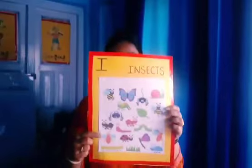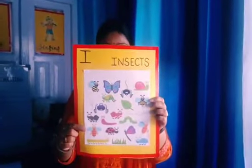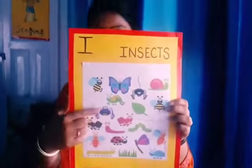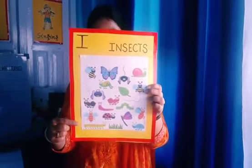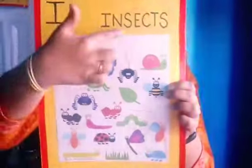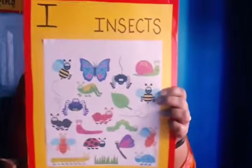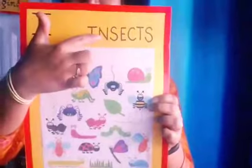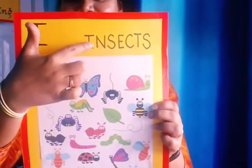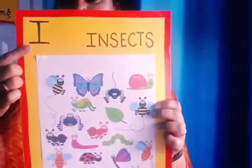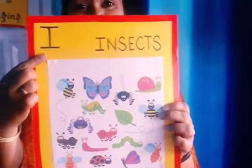And these are — what are these? Look at them. So many lovely little creatures. These are called insects. What do we call them? Insects. So insects also start with alphabet I.